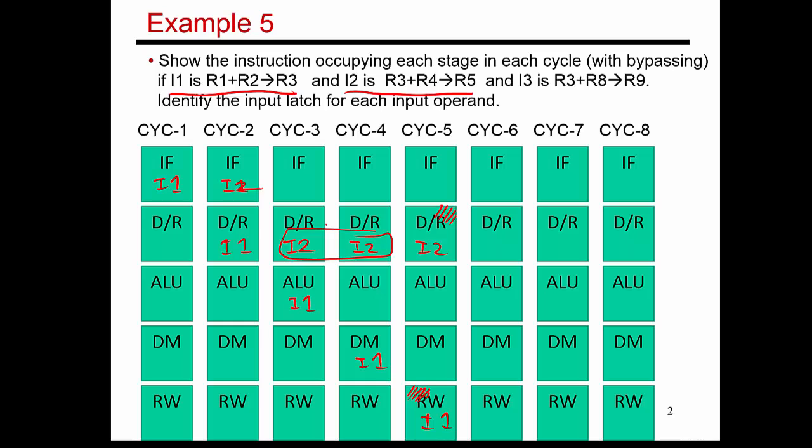Bypassing is trying to avoid these two stall cycles. Without bypassing, we were assuming that all values are exchanged between two instructions through the register file. The producer has to put something into the register file, and then the consumer has to read that value from the register file. And that introduces these additional delays or gaps between the producer and the consumer.